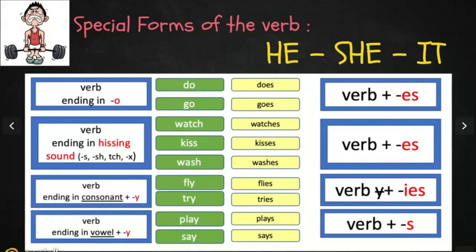We're also going to modify the verb if it ends in consonant plus Y — we will change it to IES. Fly becomes flies and try becomes tries. And lastly, if the verb ends in vowel plus Y, we keep the Y and add S. Play becomes plays and say becomes says.